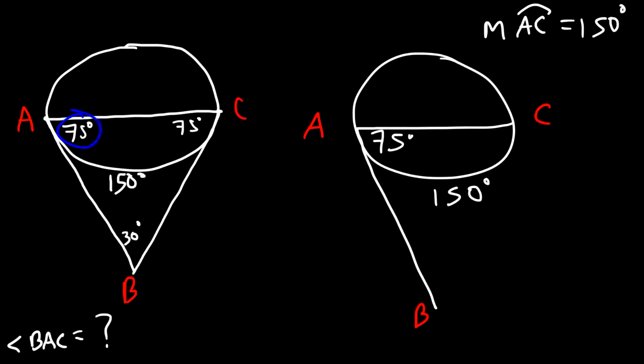So angle CAB is 75 and angle ACB is also 75 — they are equal because they intercept the same arc. Adding the three angles: 75 plus 75 plus 30 equals 180, which is correct for a triangle. So the answer, angle BAC, is 75 degrees.